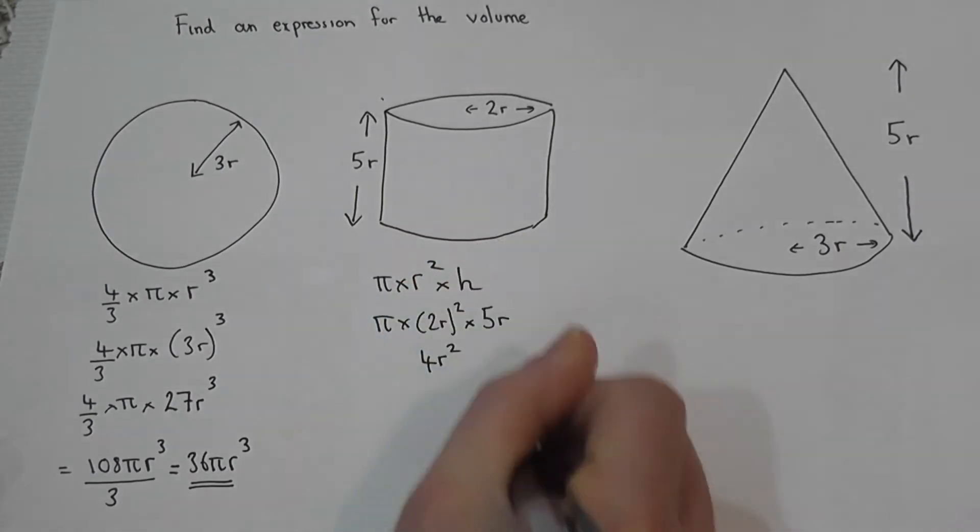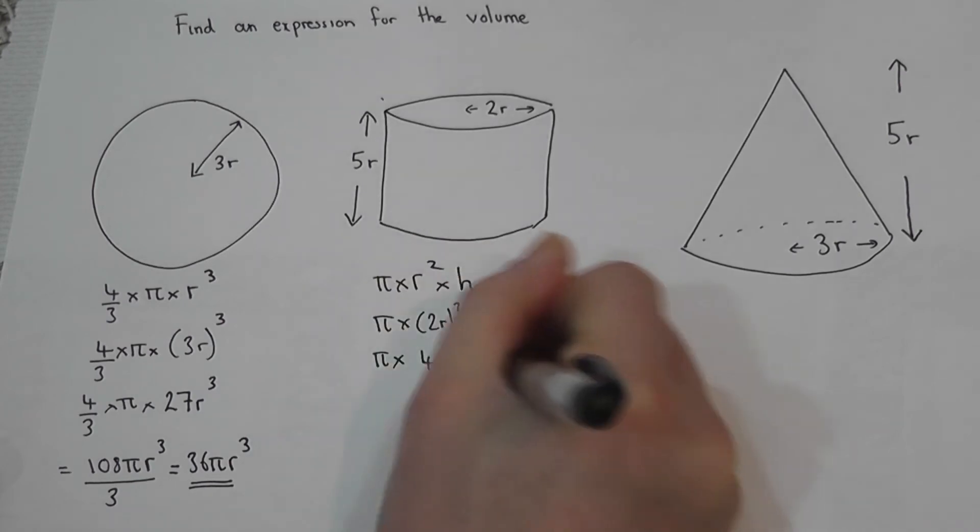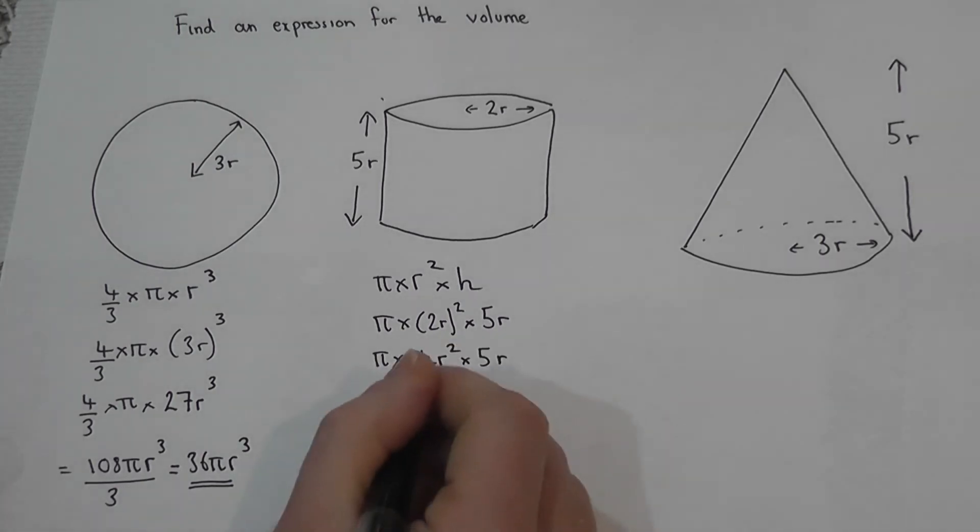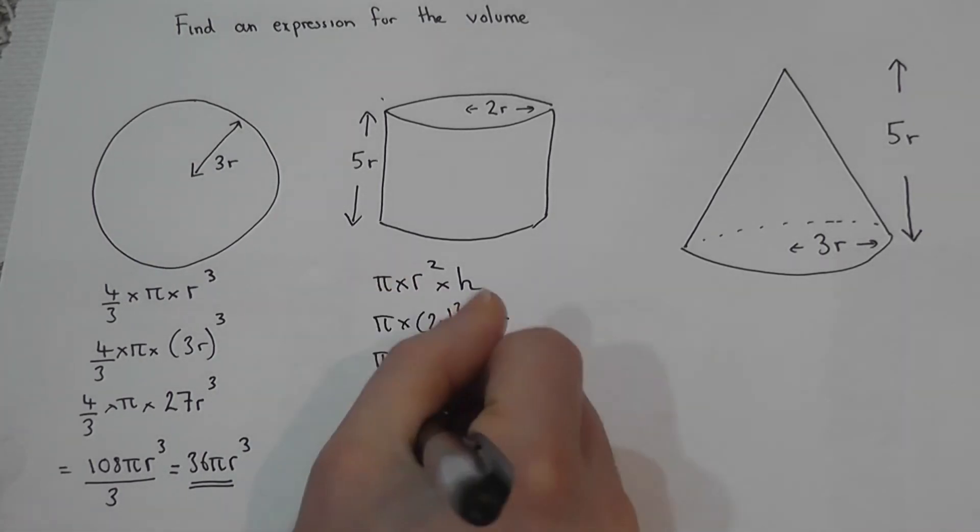There's a pi here. There's also a 5r. Then to finish off we then do 4 times 5 is 20. There's a pi.